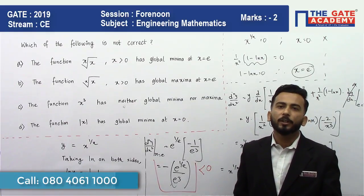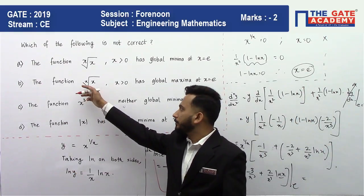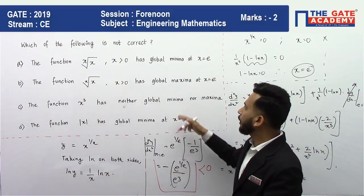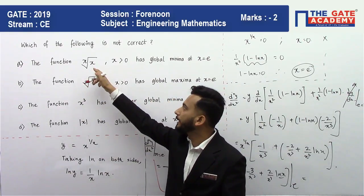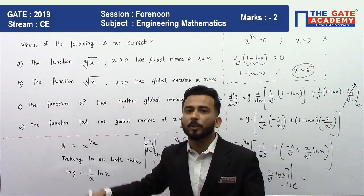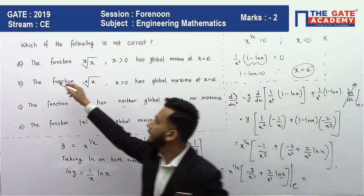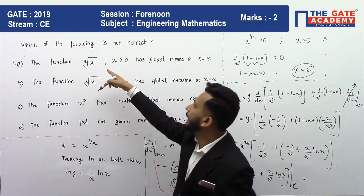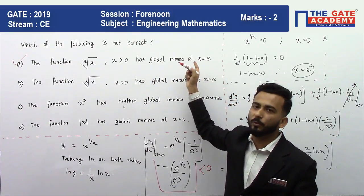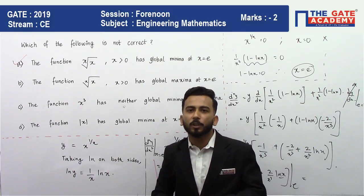Since d²y/dx² < 0 at x = e, that point is a maxima, not a minima. Therefore option A — which states that x^(1/x) has global minima at x = e — is NOT correct. Options B, C, and D are all correct. The answer is option A.